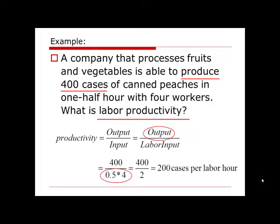Eventually we get the productivity as 400 divided by 2, which gives us 200. The measure of productivity in this example is cases per labor hour — meaning this productivity is 200 cases per labor hour. If we spend one labor hour on this product, we can produce 200 cases. This measure unit varies from one calculation to another depending on what we use to calculate productivity.